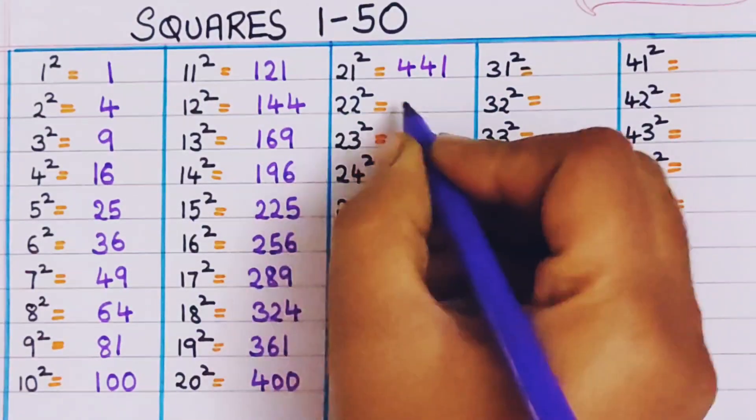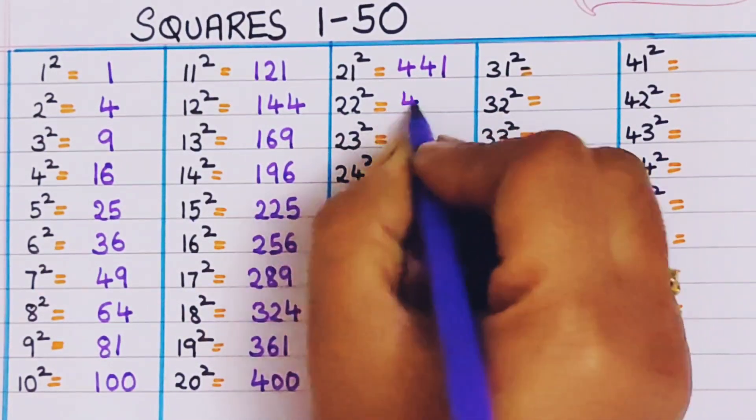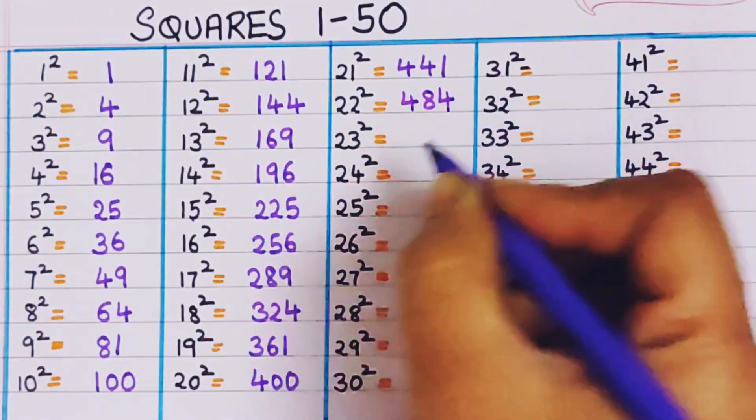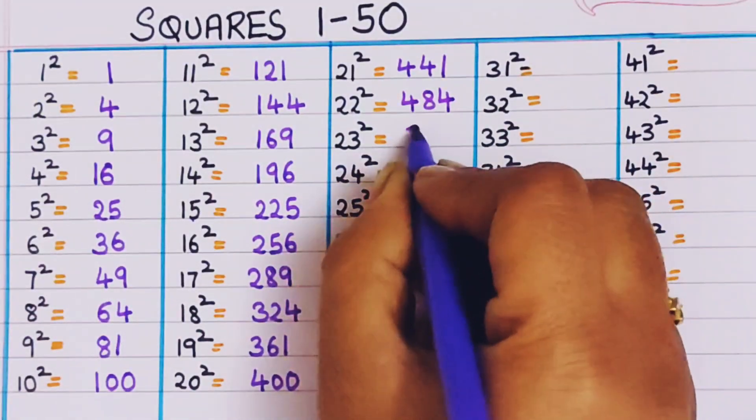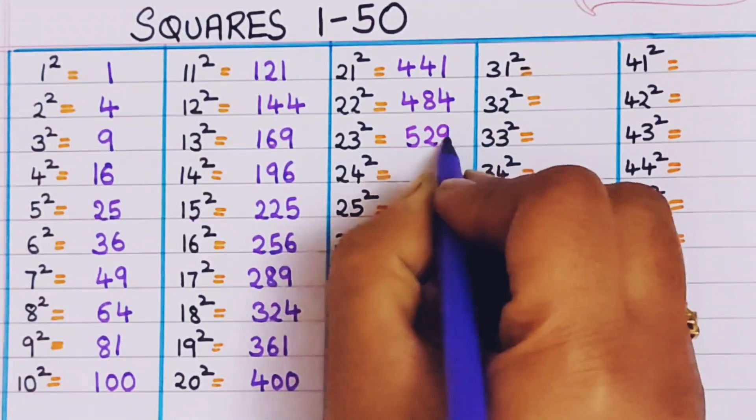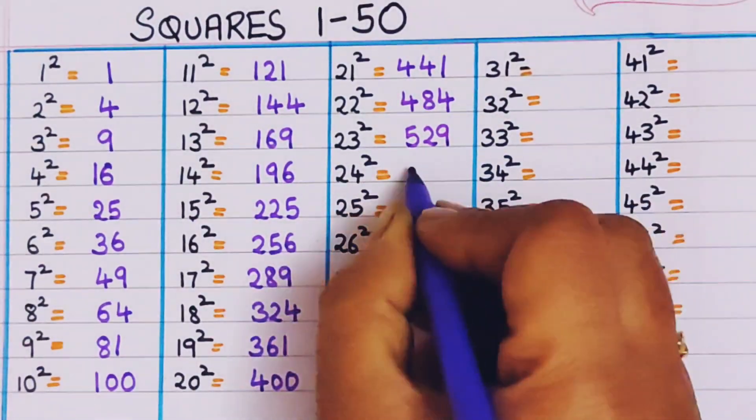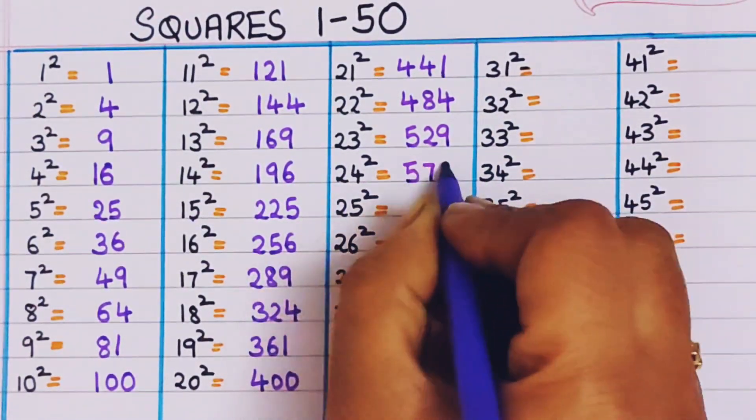22 square, 484. 23 square, 529. 24 square, 576.